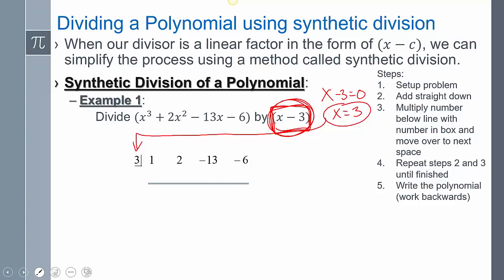And then we draw a line. We're going to follow this pattern: you add straight down, zero plus one is one. Then you multiply this value within the box, so one times three goes into the next box. Add straight down five, multiply five times three fifteen, add straight down, multiply two times three is six, add straight down.